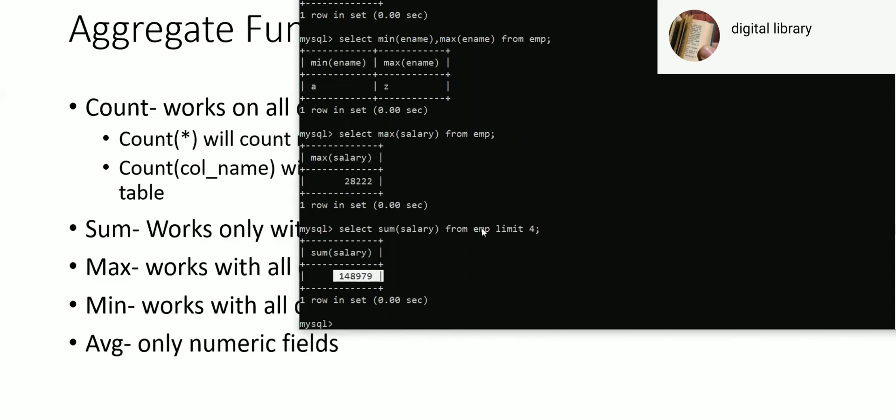LIMIT works on the final result set, so it will first execute this query. This query anyways gives only one row, so limit four will not have any impact on it.